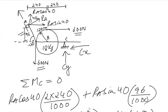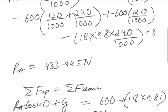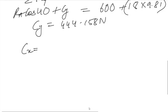RA sin 40 and 600 Newton tension acting towards the right hand side. This will be equal to 600 plus RA sin of 40 degrees.